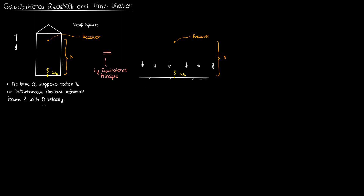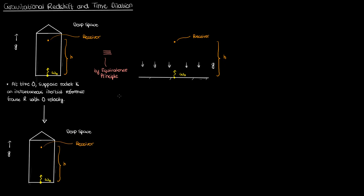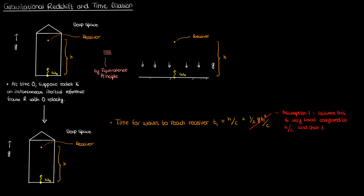Let's derive the equation for gravitational redshift by looking at the scenario of the accelerating rocket. The source emits electromagnetic waves at a frequency omega naught. The speed of those waves is the speed of light C, so the time it takes for the wave to reach the observer is T1, which is just h over C. In actual fact, T1 is slightly higher than h over C because the observer has moved up an additional distance of half g T1 squared. However, we assume this half g T1 squared distance is very small compared to h over C, since light travels so quickly that the receiver barely has any time to move up before the wave reaches him. By this time, the receiver has gained a new velocity of g times T1, which is gH over C.